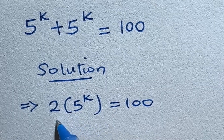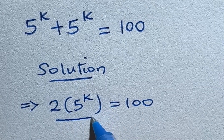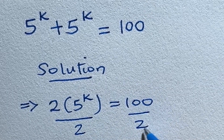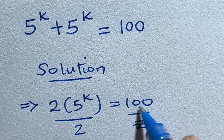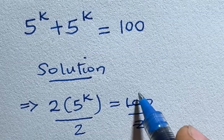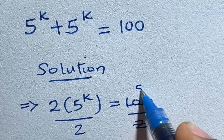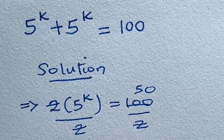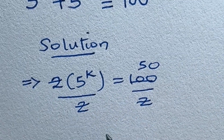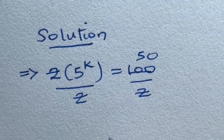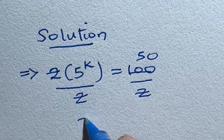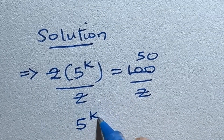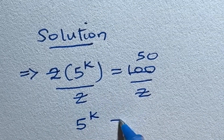Go ahead and divide by 2. This gives us 50 on the right hand side, taking care of the 2 on the left. We are left with 5 raised to the power of k is equal to 50.